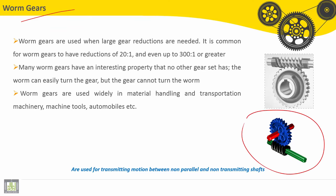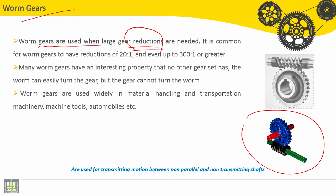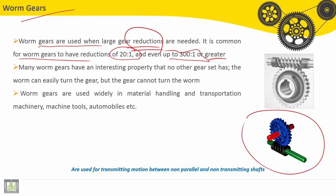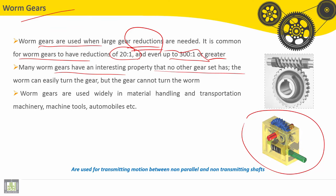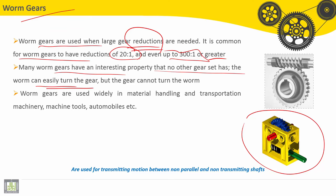Here we have a worm gear system. Worm gears are used when large gear reductions are needed. It is common for worm gears to have a reduction of 20 to 1, even up to 300 to 1 or greater, making a high ratio of reduction. Many worm gears have an interesting property that no other gear set has: the worm can easily turn the gear.